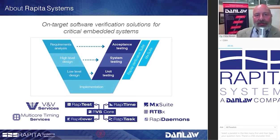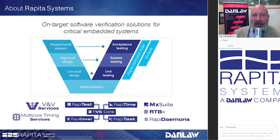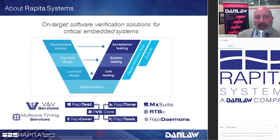The team of more than 50 employees — 40 percent of whom are PhD researchers — are part of the Danla group. Their successful growth is based on incorporating bleeding-edge intellectual properties into the Rapida line of verification and validation tools. The solutions help customers improve their software quality and deliver all the evidence needed to meet safety and certification objectives.